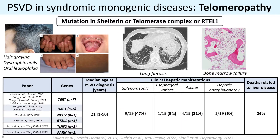For these mutations, the patient presents three main manifestations: premature hair greying, dystrophic nails, and oral leukoplakia. There are also other main clinical manifestations like lung fibrosis and bone marrow failure. As you can see in the table, the median age of PSVD diagnosis was young at 21 years old. Splenomegaly was systematically observed, ascites was present in some cases, esophageal varices were either present or rare, encephalopathy was quite rare, and 26% of deaths were related to liver complications.